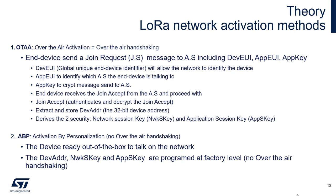The second activation method is Activation By Personalization (ABP): we hard-code — flash — all those values during the production stage. This is a little easier than OTAA because there is no activation stage and we can save energy. However, we need to manage all security during production: how to store the keys, how to distribute them safely. The cost of ABP is a slightly more complex production process. When activated by personalization, the node is ready to communicate immediately after power-on without a joining stage.